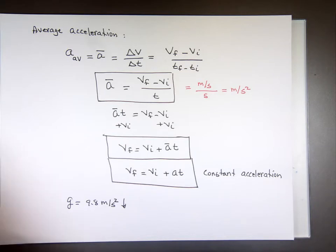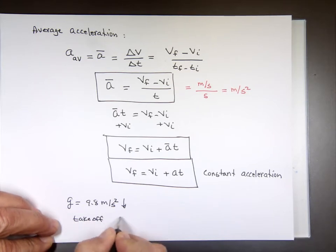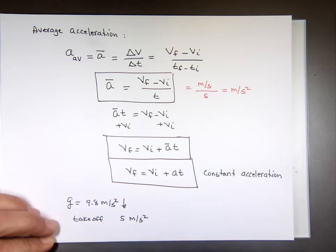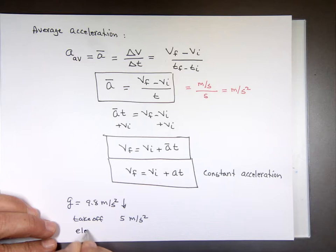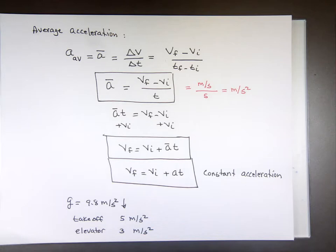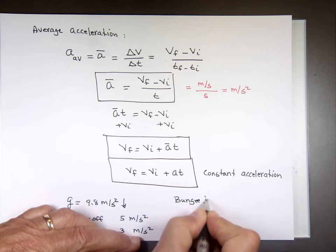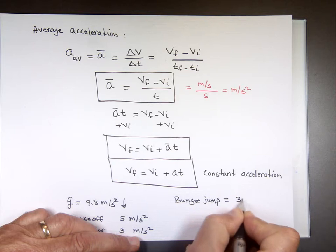Now just some numbers about acceleration. If you've ever flown on a commercial plane, the takeoff acceleration is roughly 5 meters per second squared. When you're in an elevator going up or down, the acceleration is roughly 3 meters per second squared. And for bungee jumping, that acceleration is roughly 30 meters per second squared.